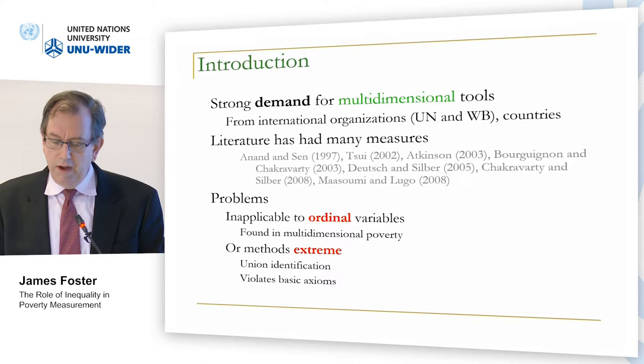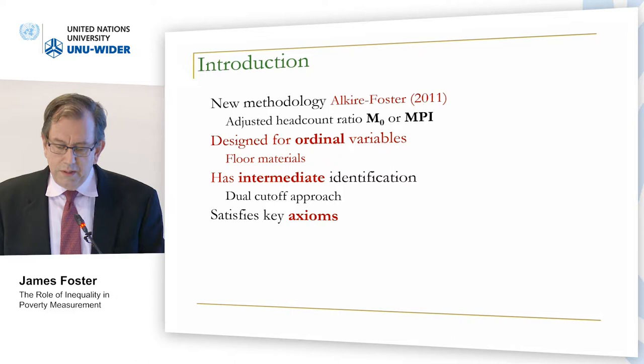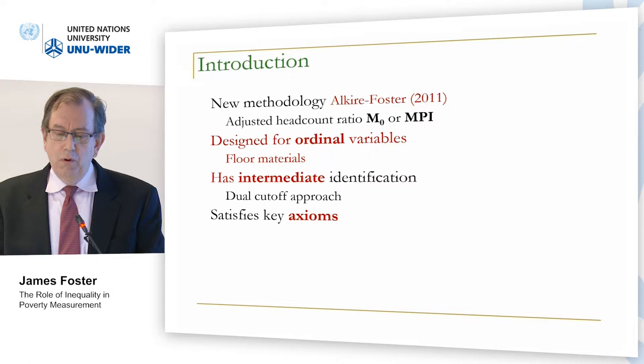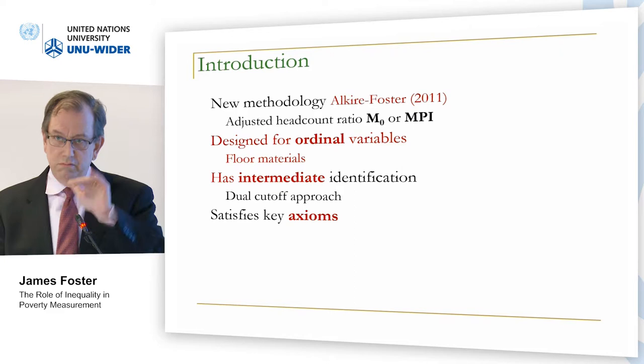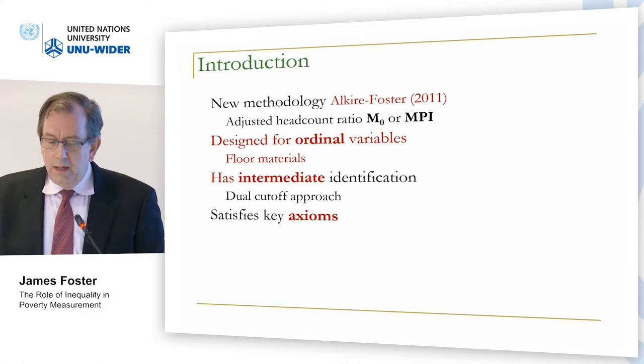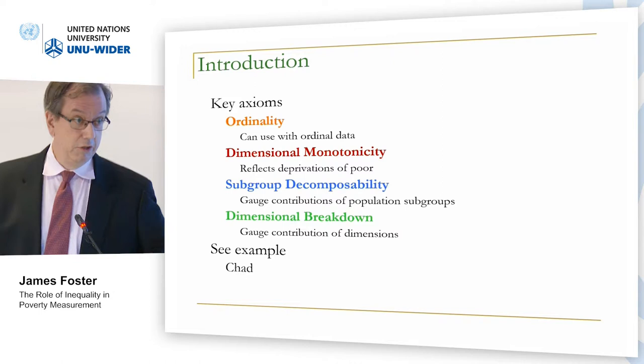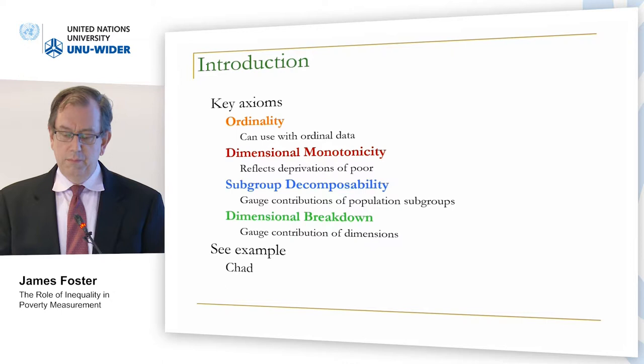The new methodology we put together was called the adjusted headcount ratio, or MPI. It was designed for ordinal variables such as floor materials. It has intermediate identification — a dual cutoff approach — two types of cutoffs: one within each dimension, and one across dimensions to determine who is poor. It satisfies key axioms including ordinality, dimensional monotonicity (if a poor person has an additional deprivation it will be reflected in the numbers), subgroup decomposability, and dimensional breakdown.